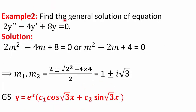Example 2: Find the general solution of 2y'' − 4y' + 8y = 0. The auxiliary equation after substitution is 2m² − 4m + 8 = 0. Dividing by 2 and solving the quadratic gives imaginary roots 1 ± i√3, so a = 1 and b = √3. Using the Case 2 formula, the general solution is y = e^x(c1 cos(√3·x) + c2 sin(√3·x)).